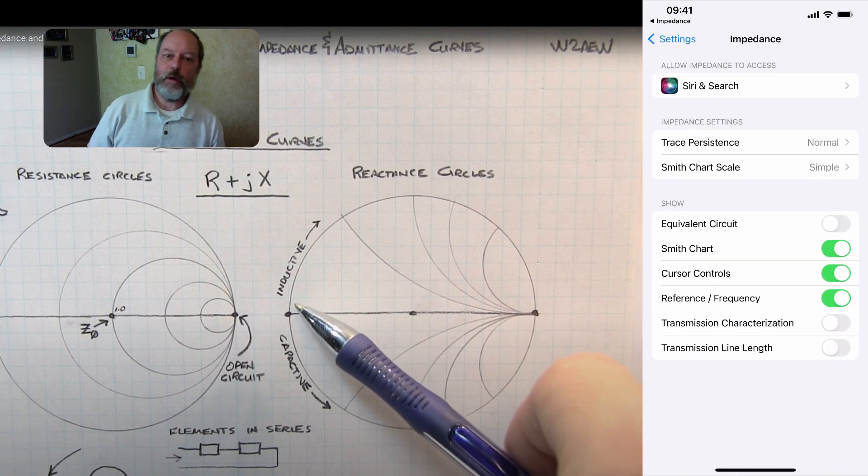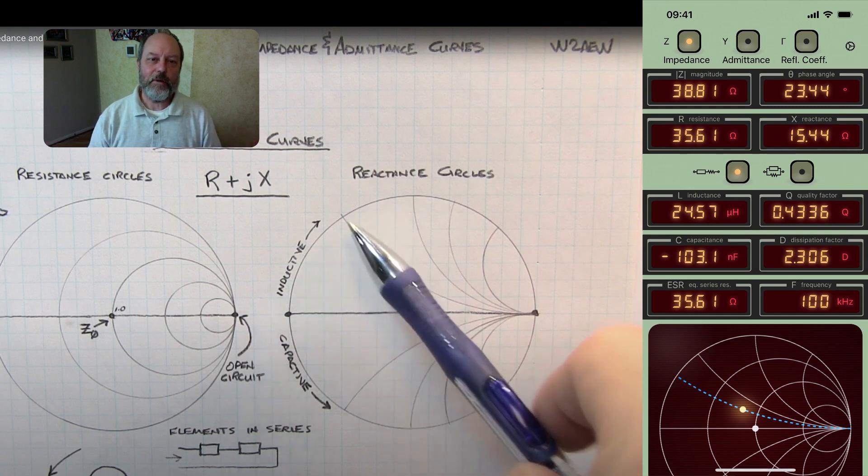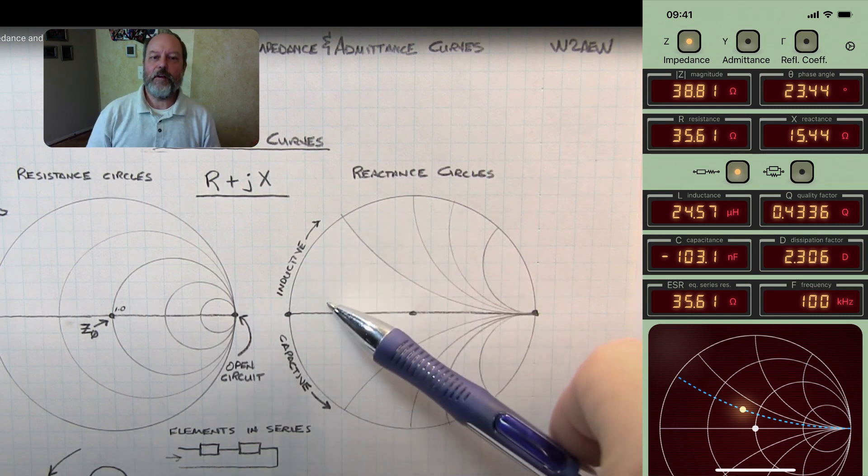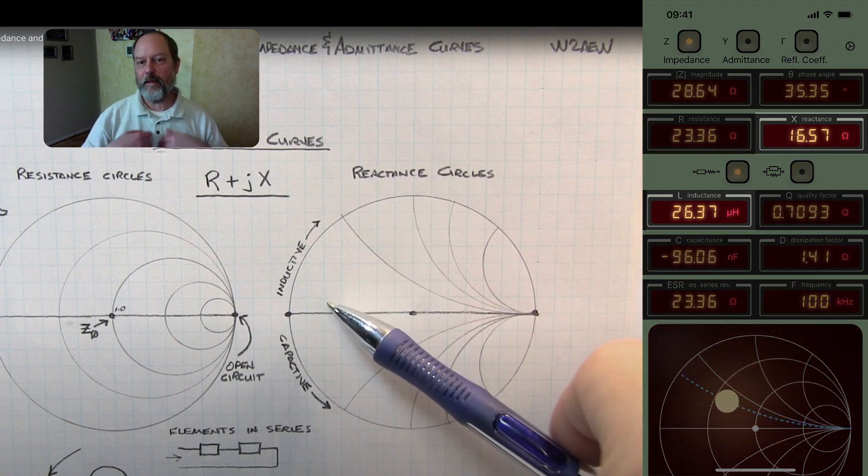Okay, now I'm going to re-enable the equivalent circuit view so we can see the capacitance and inductance. And note that as Alan is showing you, when you're in the top half of the Smith chart, the reactive component of the impedance is positive, and that's associated with being inductive.